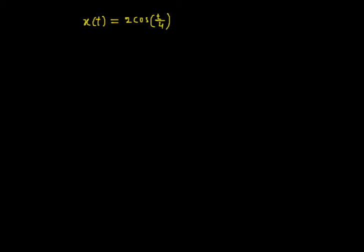Welcome to the video lecture on periodic and aperiodic signals. In this video, we will consider a continuous time signal x(t) equals 2 times cosine of t divided by 4. The task is to determine if this signal is periodic or not.